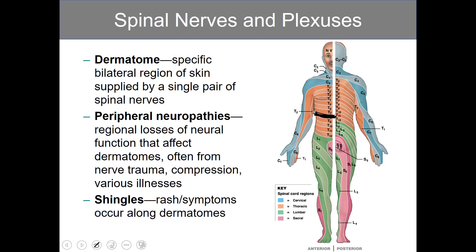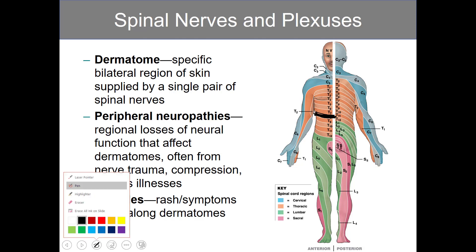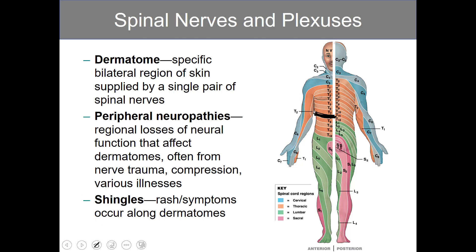Shingles is a viral infection that causes a rash or symptoms that occur along dermatomes. People often describe shingles as producing these distinctively patterned rashes that follow along the same dermatome regions.